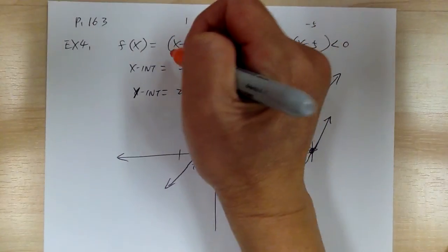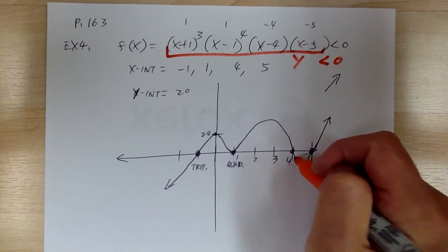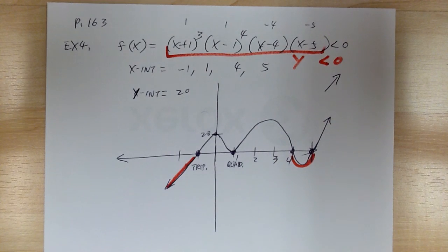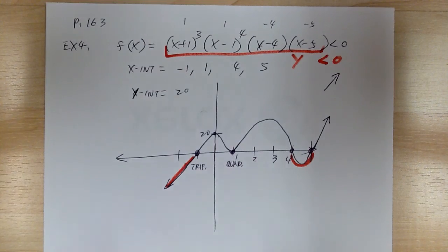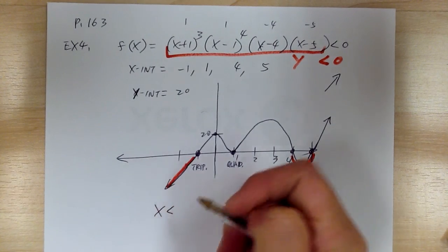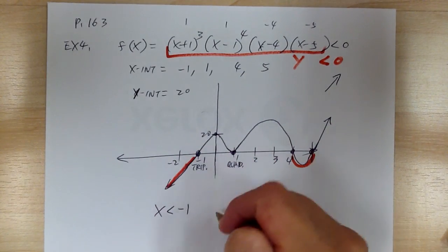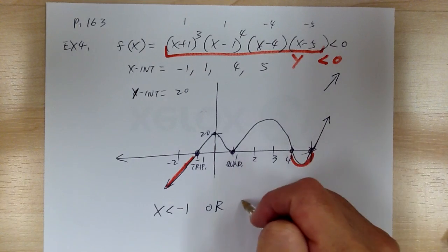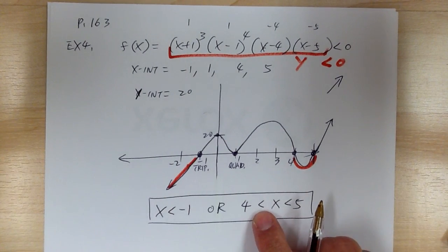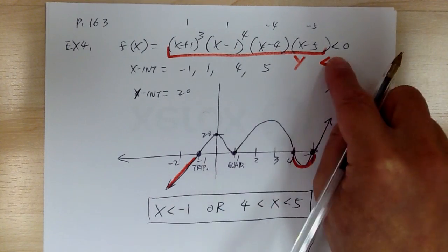You're solving f(x) < 0, so you're looking for y less than 0 — the parts of the graph below the x-axis. Those parts give you: x < -1, or 4 < x < 5. Since it's a strict inequality with no equal sign, there's no equal included in the answer. And that's it for example 4.